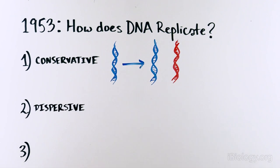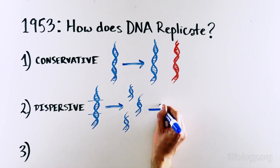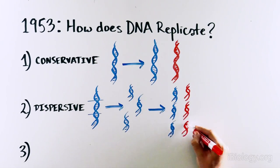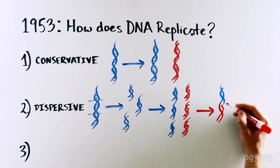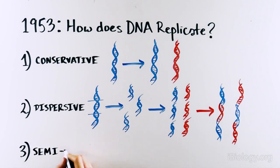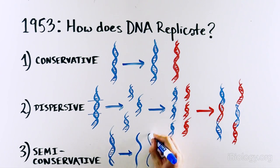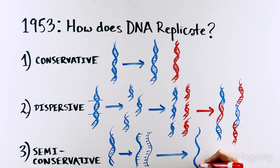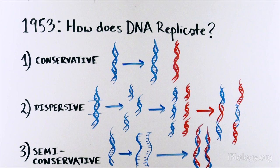The second was dispersive, where the DNA molecule would be cut at various parts, each of which would get copied here in red and reattached to produce two DNA molecules. And the third was semi-conservative, where two DNA strands would separate and each one would serve as a template to copy a second red strand, thus producing two DNA molecules.